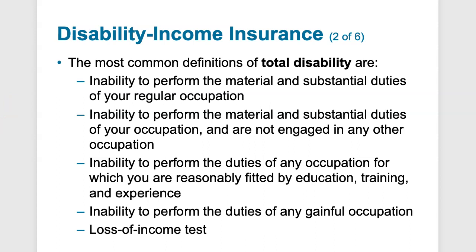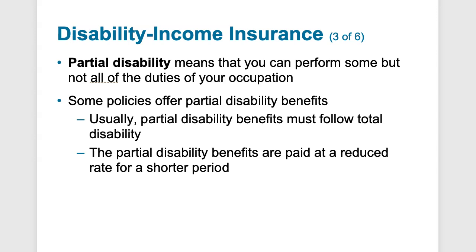The most common definition of disability is total disability — meaning you can't work at all. There are stipulations to evaluate your ability to perform the substantial duties of your occupation based on your training and experience, essentially a loss-of-income test. Partial disability means you can perform some but not all occupational duties — for example, working 20 hours a week but not 40 due to medical treatment or physical endurance limitations — and you can receive partial coverage of lost pay. Residual disability means you are gainfully employed but your loss of income is at least 50% of your prior income due to sickness or injury.